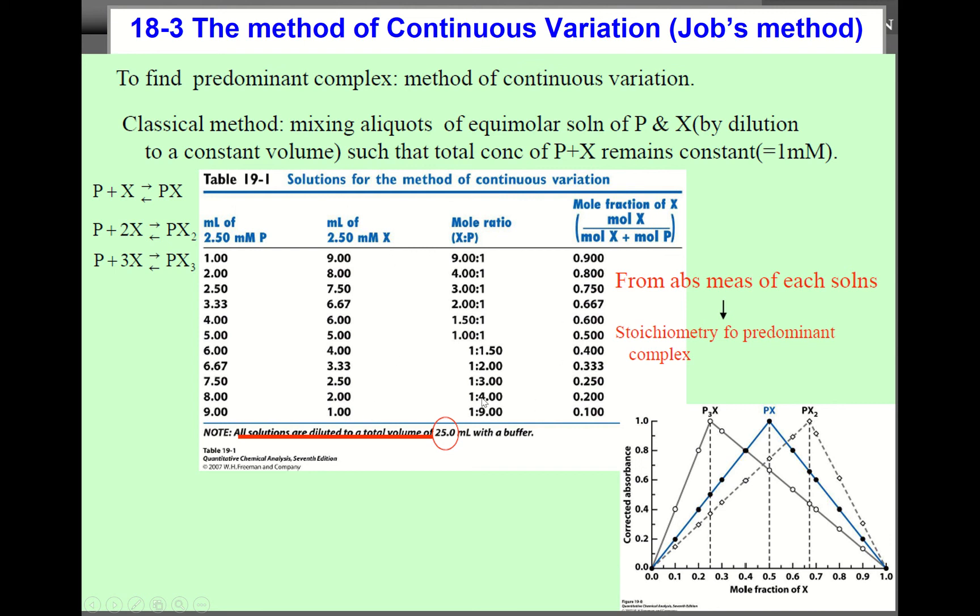And then you measure absorbance at a certain wavelength. And then after correcting the absorbance, you will get this kind of curve. A closer look at this one: X axis is mole fraction of X, this column will be the X axis. And Y axis is the corrected absorbance. And very interestingly, if P and X react one to one, then at the mole fraction of 0.5, which is half and half, at this mole fraction you get the maximum corrected absorbance.